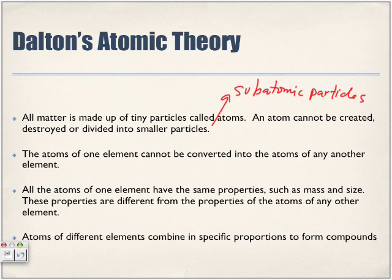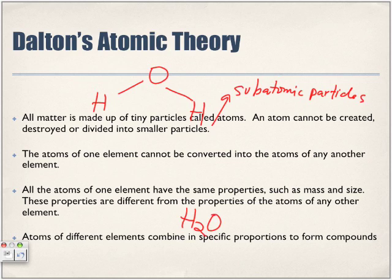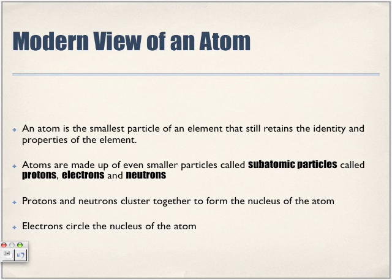Atoms of different elements combine in specific proportions to form compounds. For example, water is always H₂O — one oxygen bonded to two hydrogens. That proportion is always the same for every molecule. Similarly, CO₂ (carbon dioxide) always has one carbon with two oxygens surrounding it.